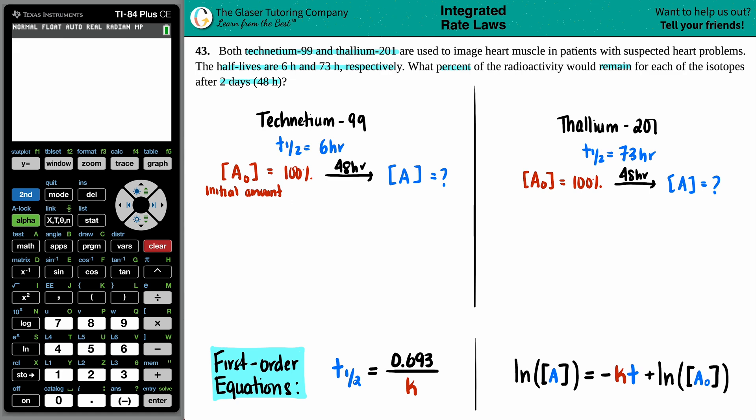Anytime that you're dealing with any element decaying, carbon, nitrogen, lithium, sodium, technetium, thallium, these are always going to abide by first order kinetics. So if they don't say it, and it's an element, it's going to be first order kinetics. So that's why I put the two first order equations that we need to know for this question. The half-life equation and the integrated rate law.